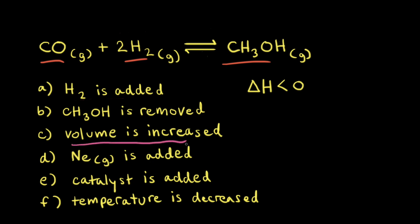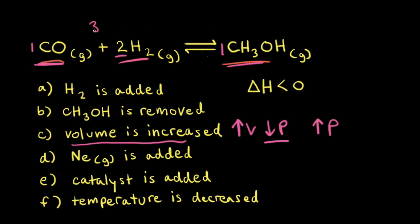Next, the volume is increased on the reaction at equilibrium. If we increase the volume, we decrease the pressure. Therefore, we can consider the stress to be decreased pressure. Le Chatelier's principle says the net reaction is going to go in the direction that relieves the stress, so the net reaction is going to shift to increase the pressure. On the reactant side, there is one mole of gas plus two moles of gas for a total of three moles of gas. On the product side, there is only one mole of gas. Since the net reaction is going to try to increase the pressure, the equilibrium shifts to the left toward the side that forms more moles of gas, therefore increasing the pressure.